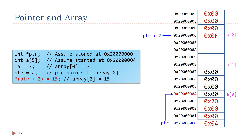What does this statement do? Pay attention — ptr+2 does not add the value of ptr by 2. In fact, it adds ptr by 2 times the size of integer. Each integer takes 4 bytes, therefore it adds ptr by 8, pointing to the third element in this integer array.